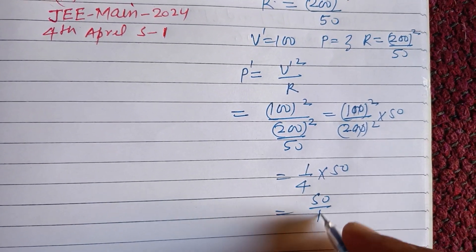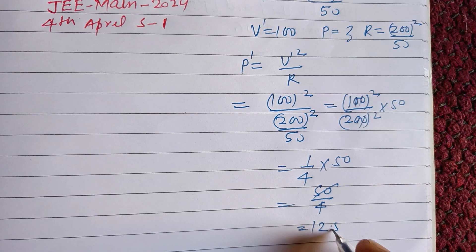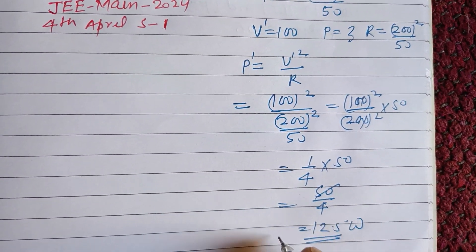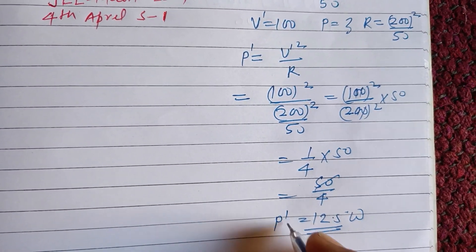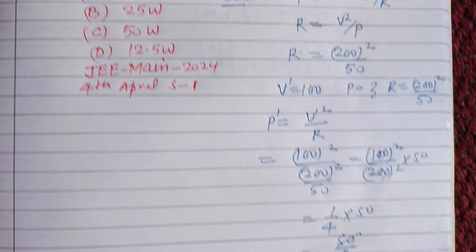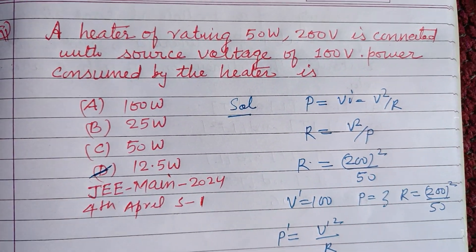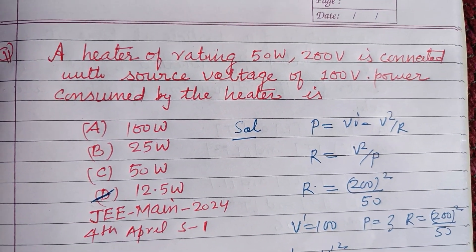So P' = 50/4 = 12.5 watt. The power consumed is 12.5 watt, which is found in option D. Therefore, option D is correct.